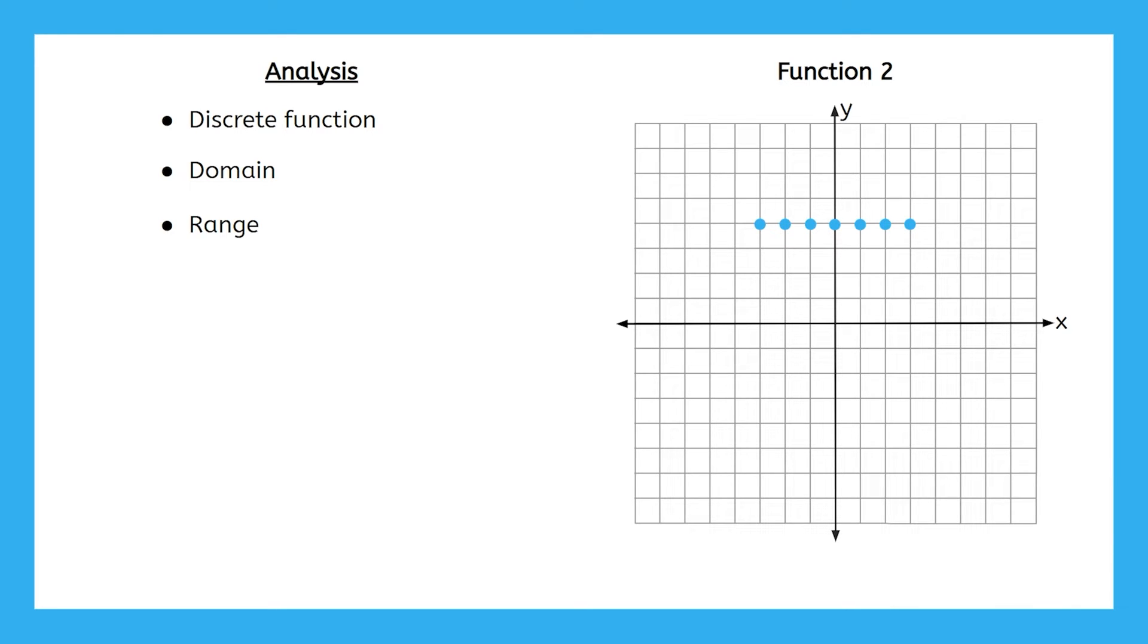Well, the domain of this function can't be all real numbers because every x value is not a valid input here. The only valid inputs of this function are negative three, negative two, negative one, zero, one, two, and three. We can write these values as our domain using curly brackets, which represents a set, which is just a list or collection of individual numbers.